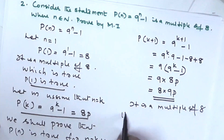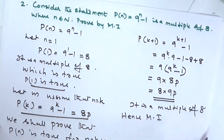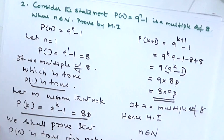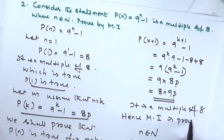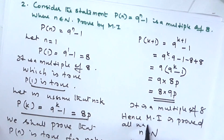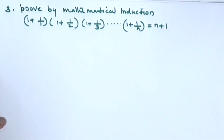Hence, mathematical induction is proved for all natural numbers N, where N is an element of N. Next question: prove by mathematical induction.